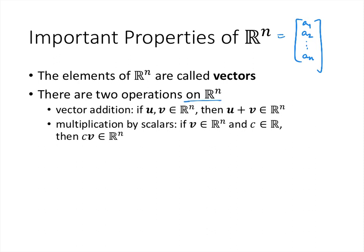And what it means for an operation to be on ℝⁿ is that these are ways that we can combine or manipulate elements of that set. So the two operations are vector addition, which just means that we can take two of these vectors and add them together, and what we get is another vector in that same set. And we can also multiply by a real number. If we have a vector in that set and we have a real scalar c, then we can multiply c times v and we get another element again in that set ℝⁿ.